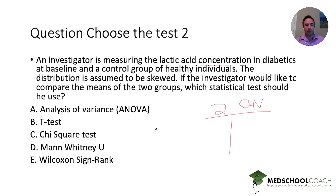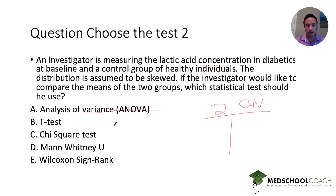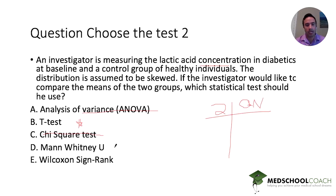Let's see how these tests hold up. The ANOVA test requires greater than or equal to three groups with quantitative data — fails on the first count. T-test: two groups and quantitative data — that works so far. Chi-squared: two groups, but qualitative data — it's out. The Mann-Whitney U and the Wilcoxon signed-rank test are both two groups and quantitative data, so we need to go to the next step.